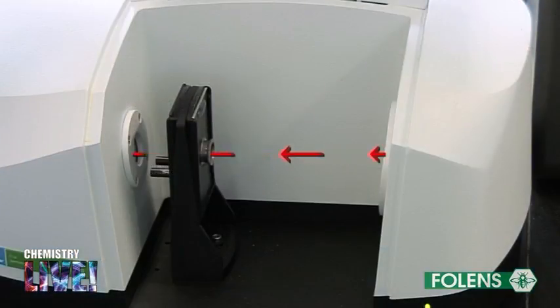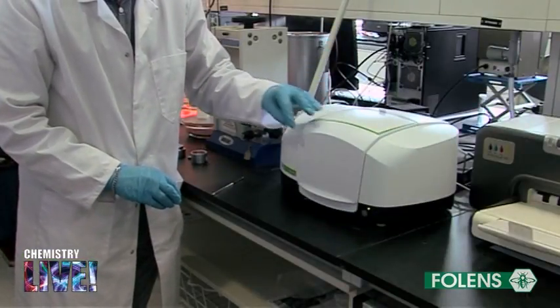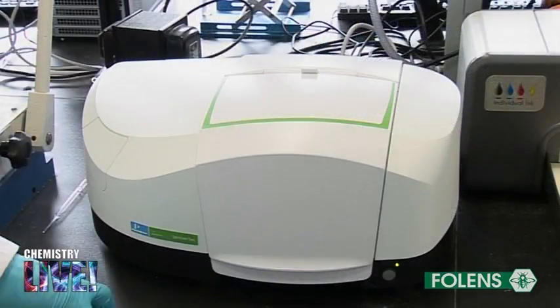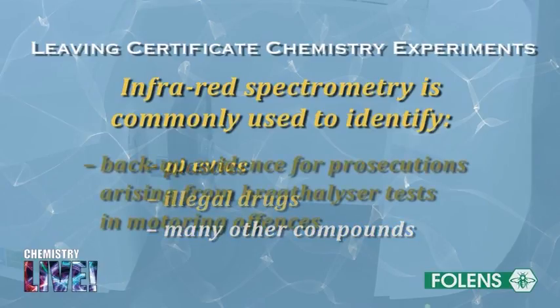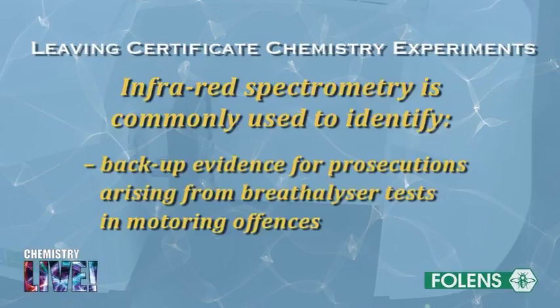The IR spectrum of a compound is obtained using an infrared spectrometer similar to that shown. Infrared spectrometry is commonly used to identify plastics, illegal drugs, and many other compounds. It is also used to back up evidence for prosecutions arising from breathalyser tests in motoring offences.